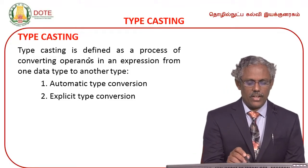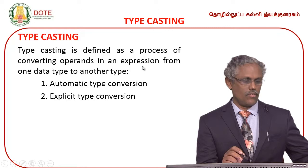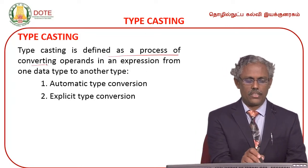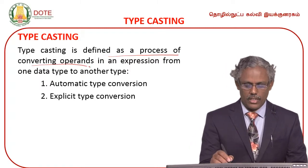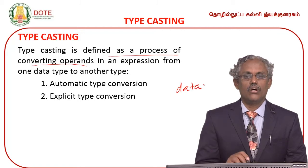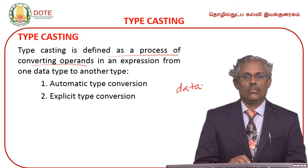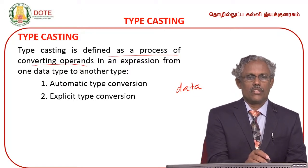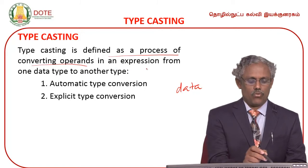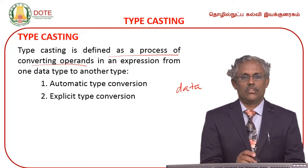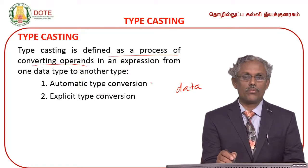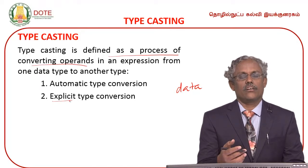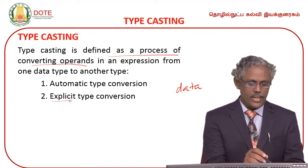Type casting is defined as a process of converting operands in an expression from one type of data to another type. There are two types of conversion: one is automatic conversion, and another is explicit or direct conversion.